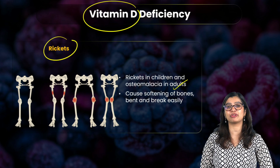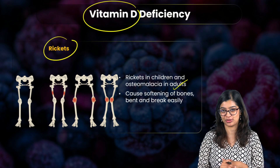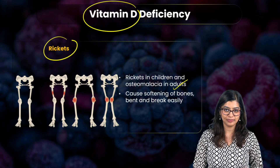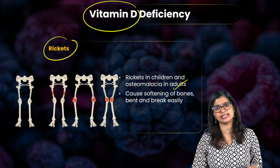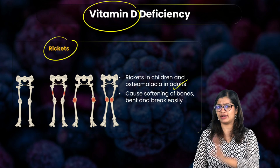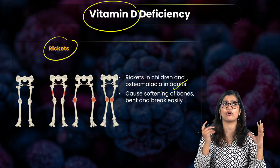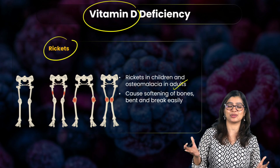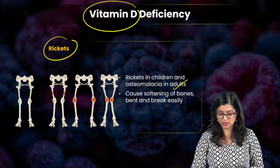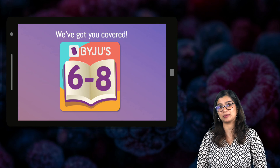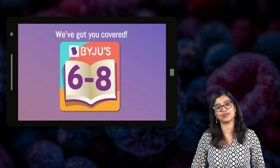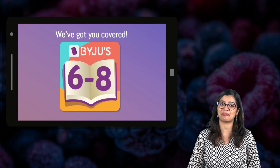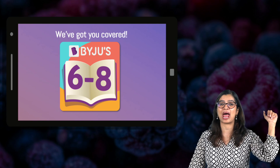We have now come to the end of today's class, having revised the entire chapter 'Components of Food.' This is a very straightforward chapter — when studying deficiency diseases or functions of nutrients, make a table for easy reference. I hope you all enjoyed this class. Don't forget to let me know in the comments, and I hope to see you all very soon. Take care, lots of love, and bye-bye!